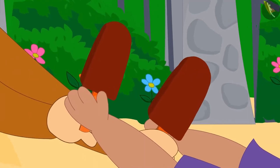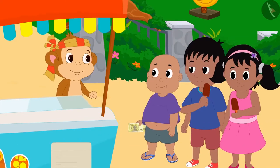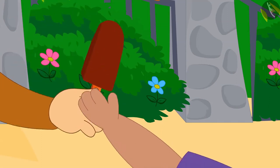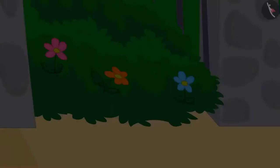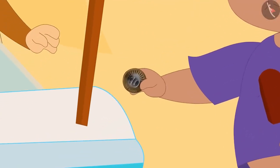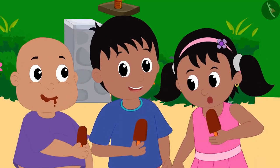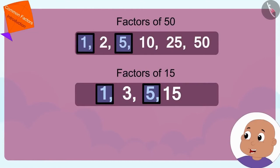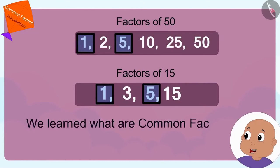Bablu bought two ten-rupee chocobar ice creams from his twenty-rupee note and a ten-rupee chocobar ice cream from his ten-rupee coin. And together with Pinky and Raju, they ate ice cream with great pleasure. Children, in this video, we learned what are common factors. In the next video, we shall learn more about it by using some interesting examples.